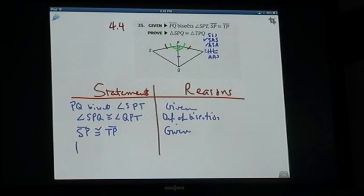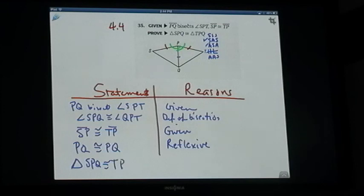And then we know that PQ is congruent to PQ by the reflexive. So now we know that triangle SPQ is congruent to triangle TPQ by side-angle-side. Here's a side. Here's a side. And here's the angle between them.